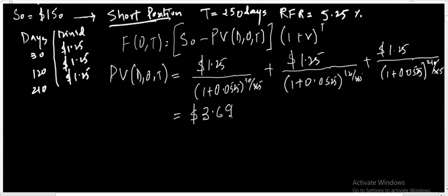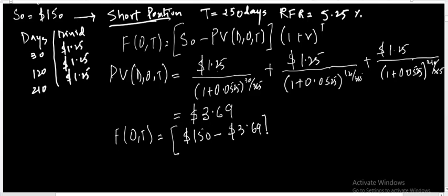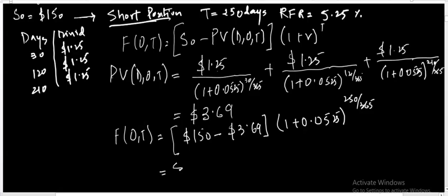Now that I have the present value of dividends, it is straightforward to calculate the forward price. The forward price equals the spot price of $150 minus the present value of dividends of $3.69, compounded at a risk-free rate of 0.0525 for a period of 250 days. This gives the forward price after 250 days equal to $151.53.